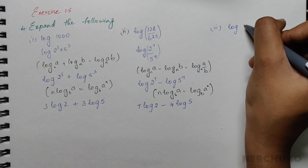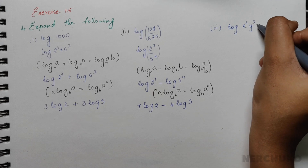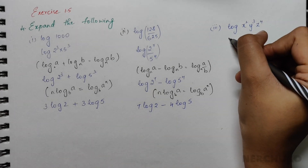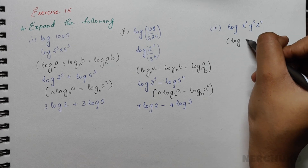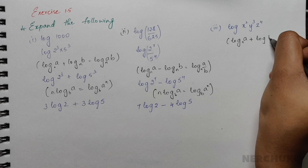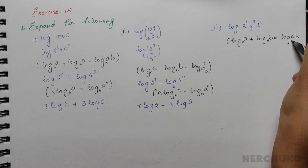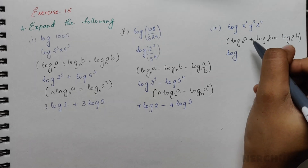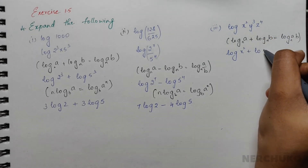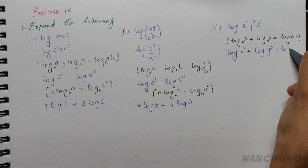For the third bit, I have log of (x² · y³ · z⁴). Since this is a multiplication inside the logarithm, I apply the formula log a + log b = log(a·b), so I would have log(x²) plus log(y³) plus log(z⁴).